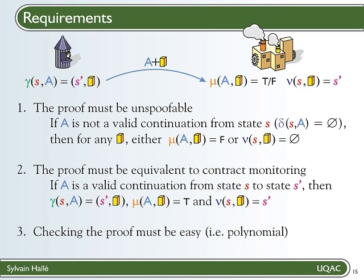For a proof to be equivalent to monitoring, it simply means that if the client gets S' as the next protocol state, in the end the server accepts the proof and also computes S' as the next protocol state. And finally, checking a proof in polynomial time corresponds to the definition of the NP complexity class. So we want mu and nu to be NP functions — not necessarily NP complete, but in NP. You'll notice that up to now I haven't expressed any preference as to the formal language to use for the interface contract. Indeed, as long as you have functions gamma, mu, and nu that follow these constraints, then you have cooperative runtime monitoring.